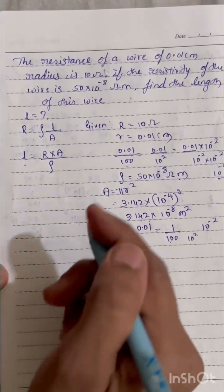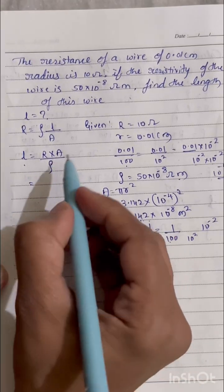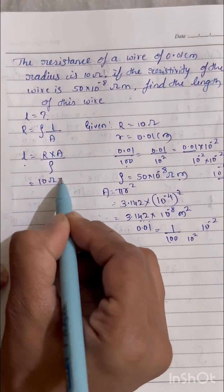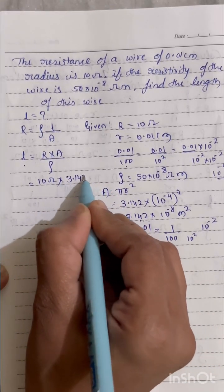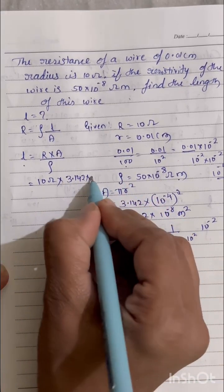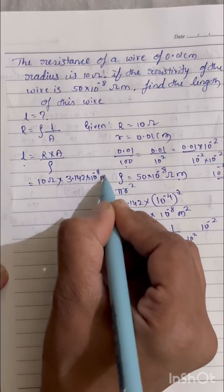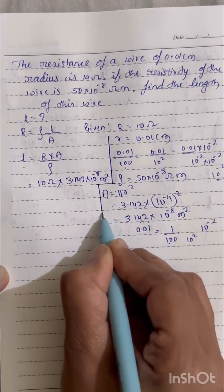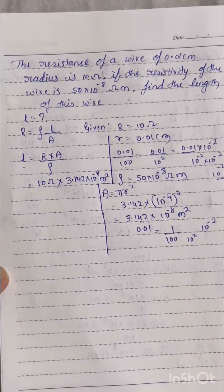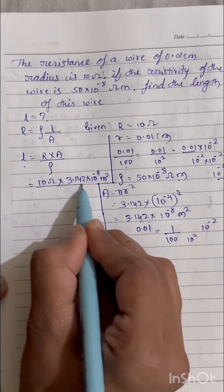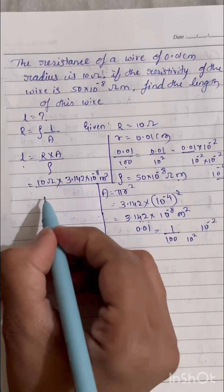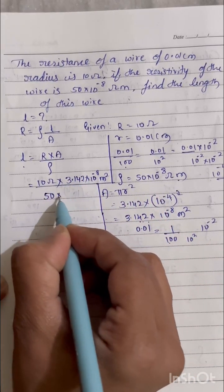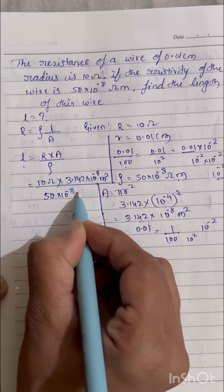Now we will substitute this value here. R, that is 10 ohm, into area we found, that is 3.142 into 10 power minus 8 meter square, divided by resistivity, it has been given, that is 50 into 10 power minus 8 ohm meter.